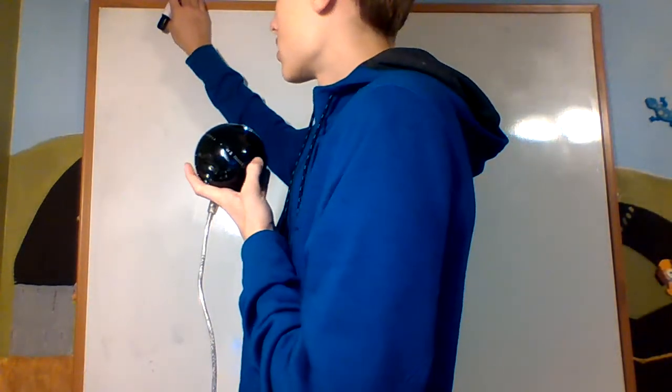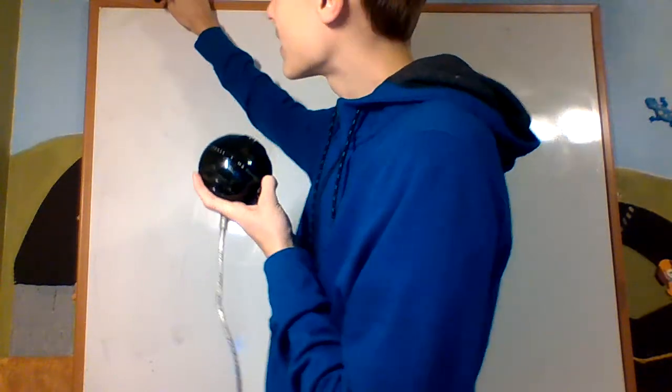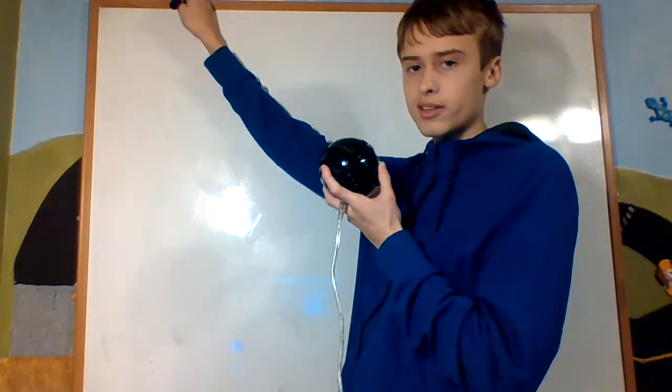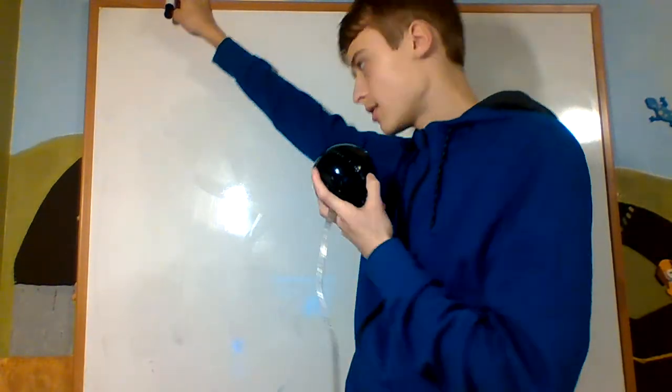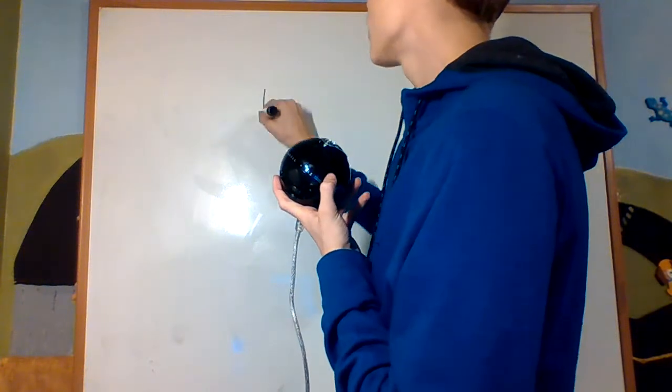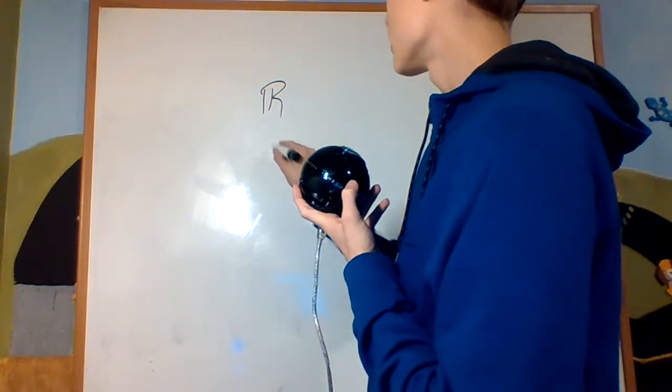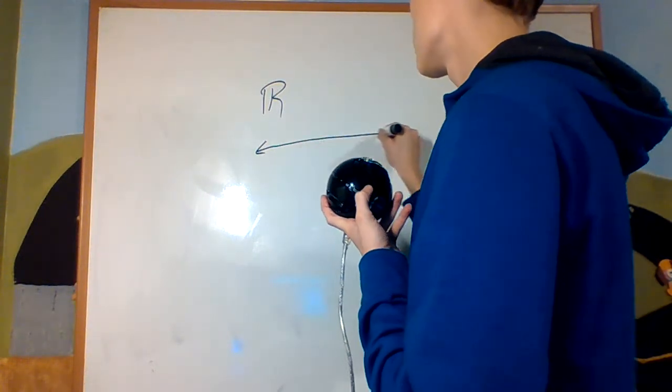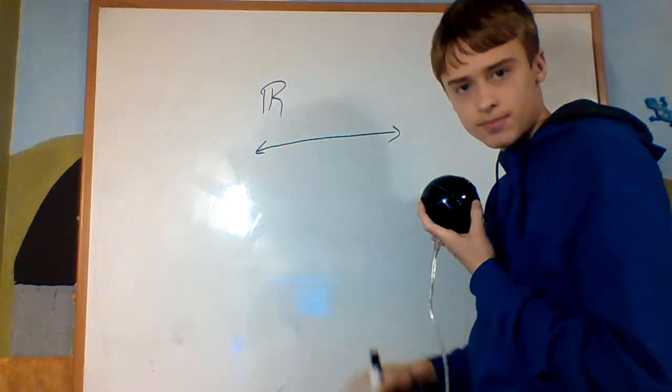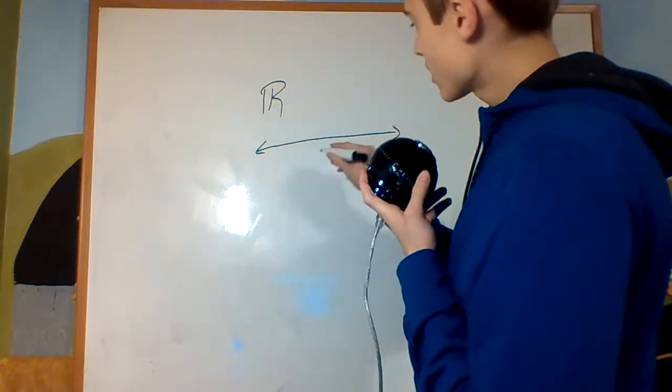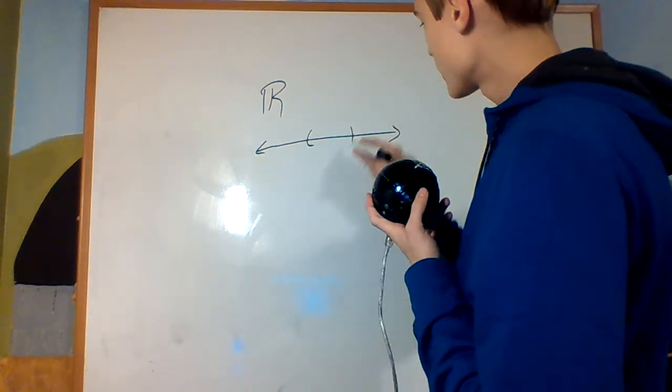So first we look at an example of what we want a topology to be. Say we have the real line. Say I have like an open interval, right?